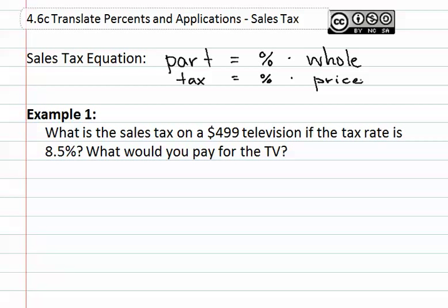In example one, it asks: what is the sales tax on a $499 television if the tax rate is 8.5 percent? And what would you pay for the TV? There are two questions here that we must make sure we answer. First, let's identify the pieces. The $499 is our original price, and our tax rate is 8.5 percent, which is our percent.